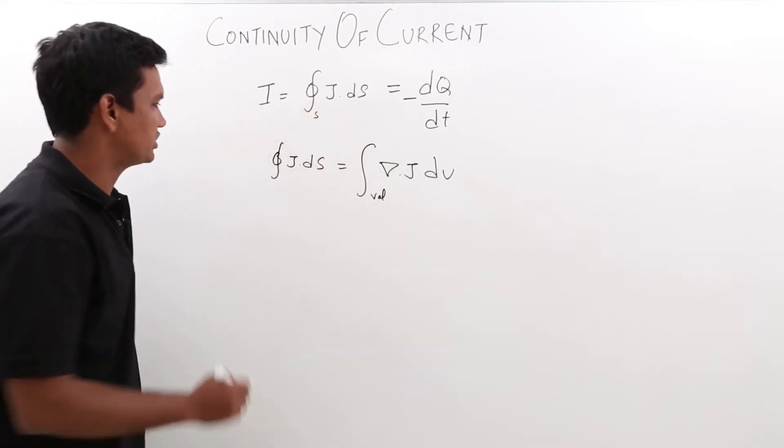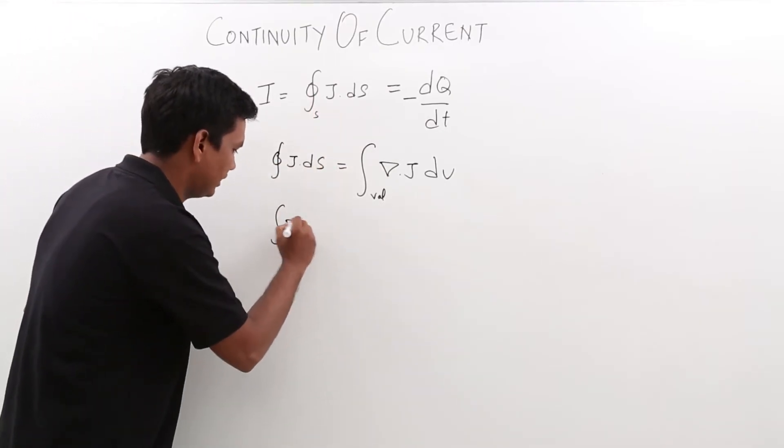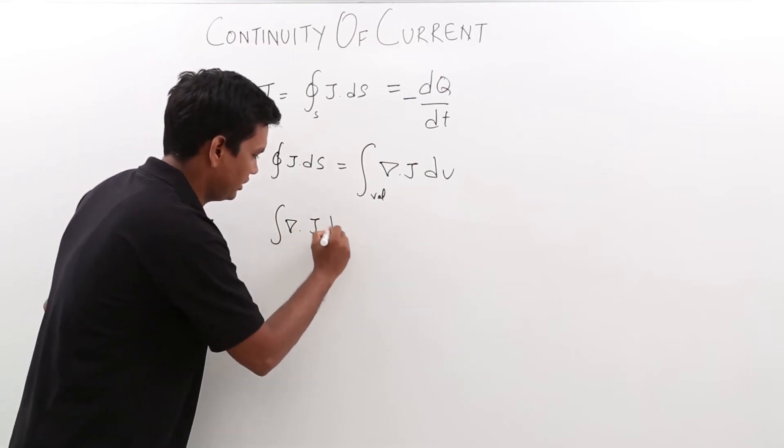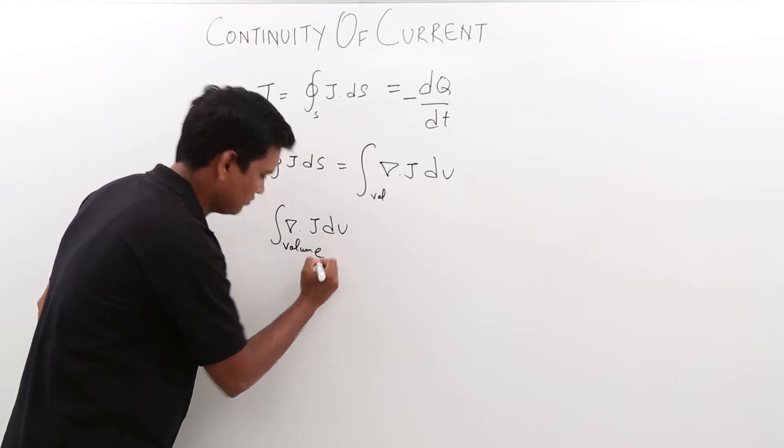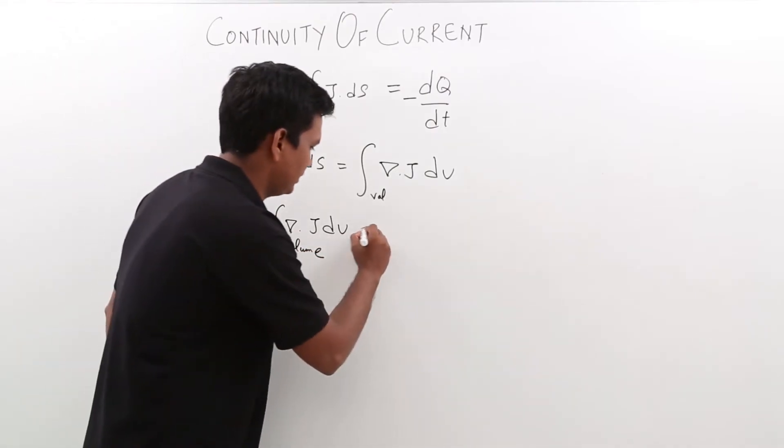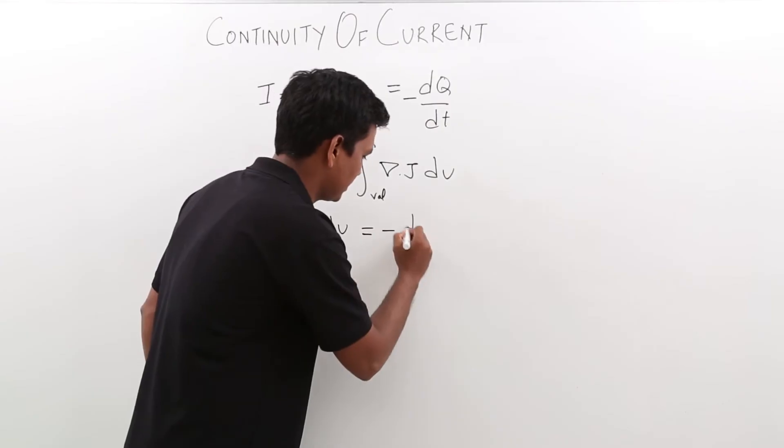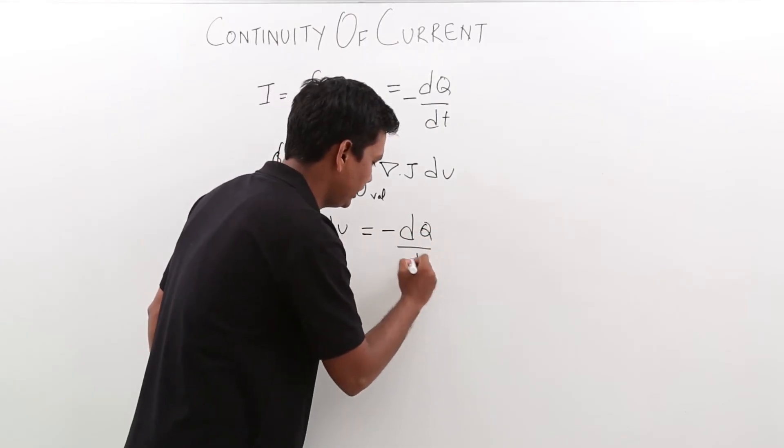So I will equate this equation. Can I say that the volume integral of del dot j dv is equal to minus dQ by dt?